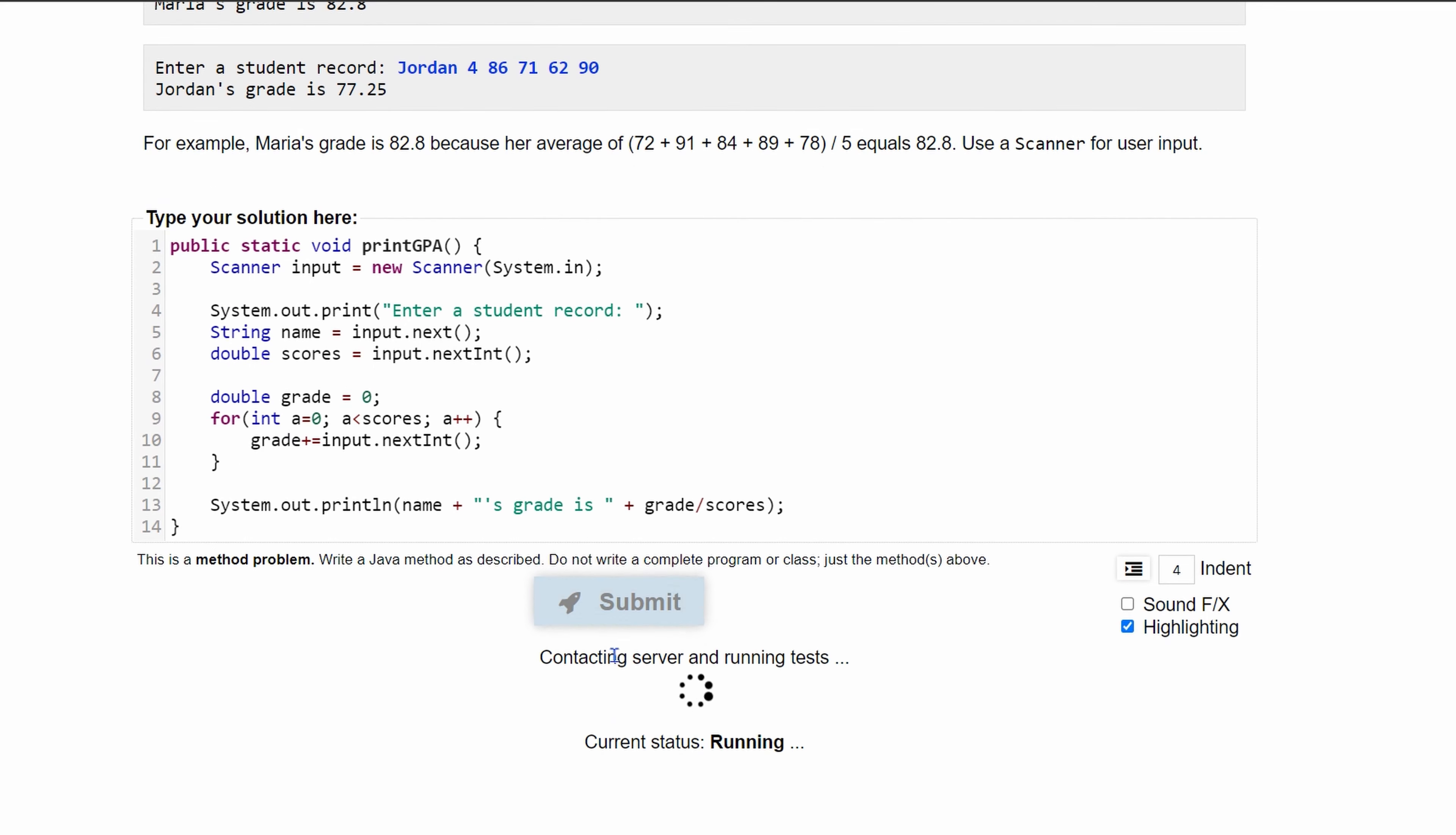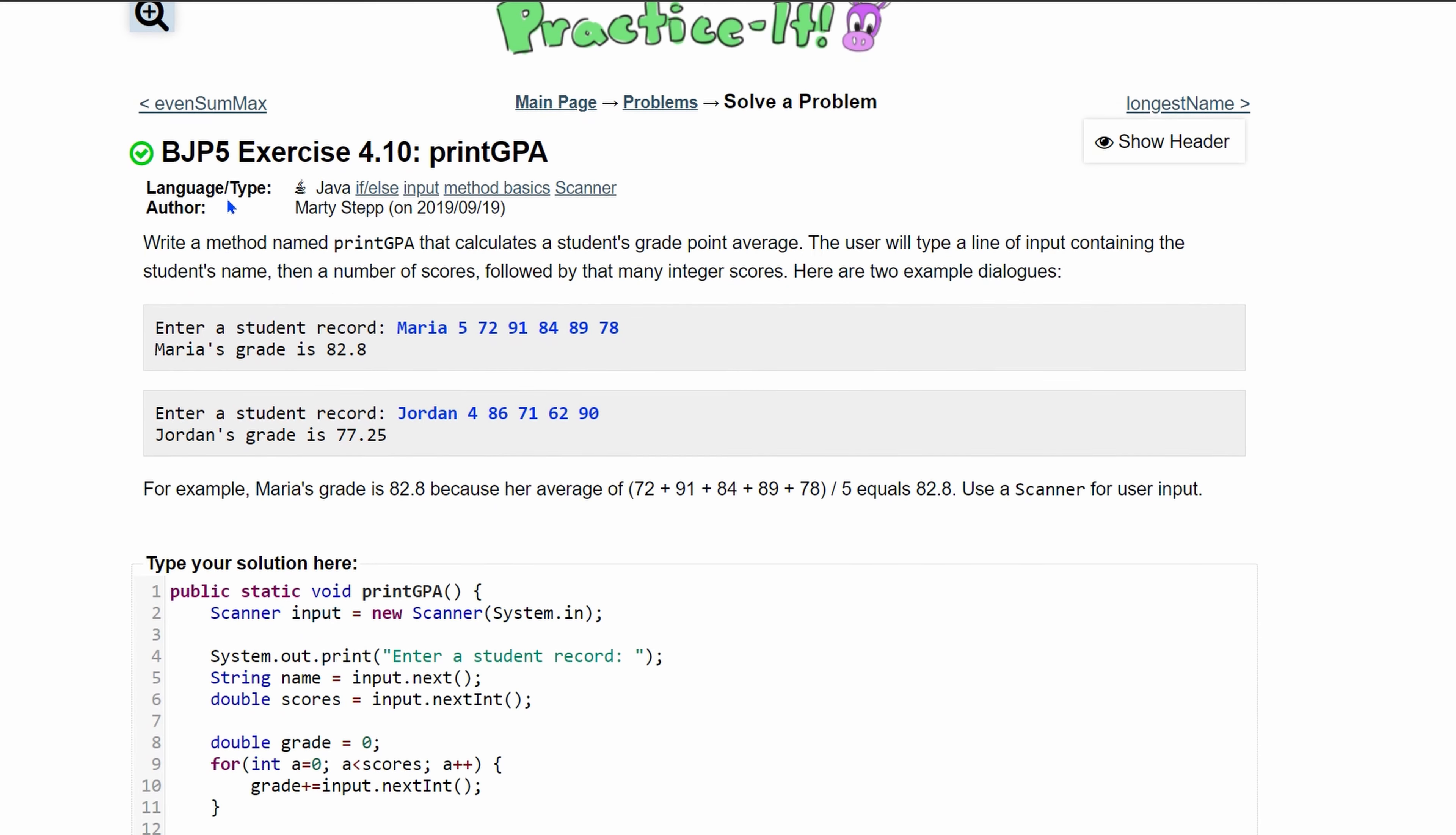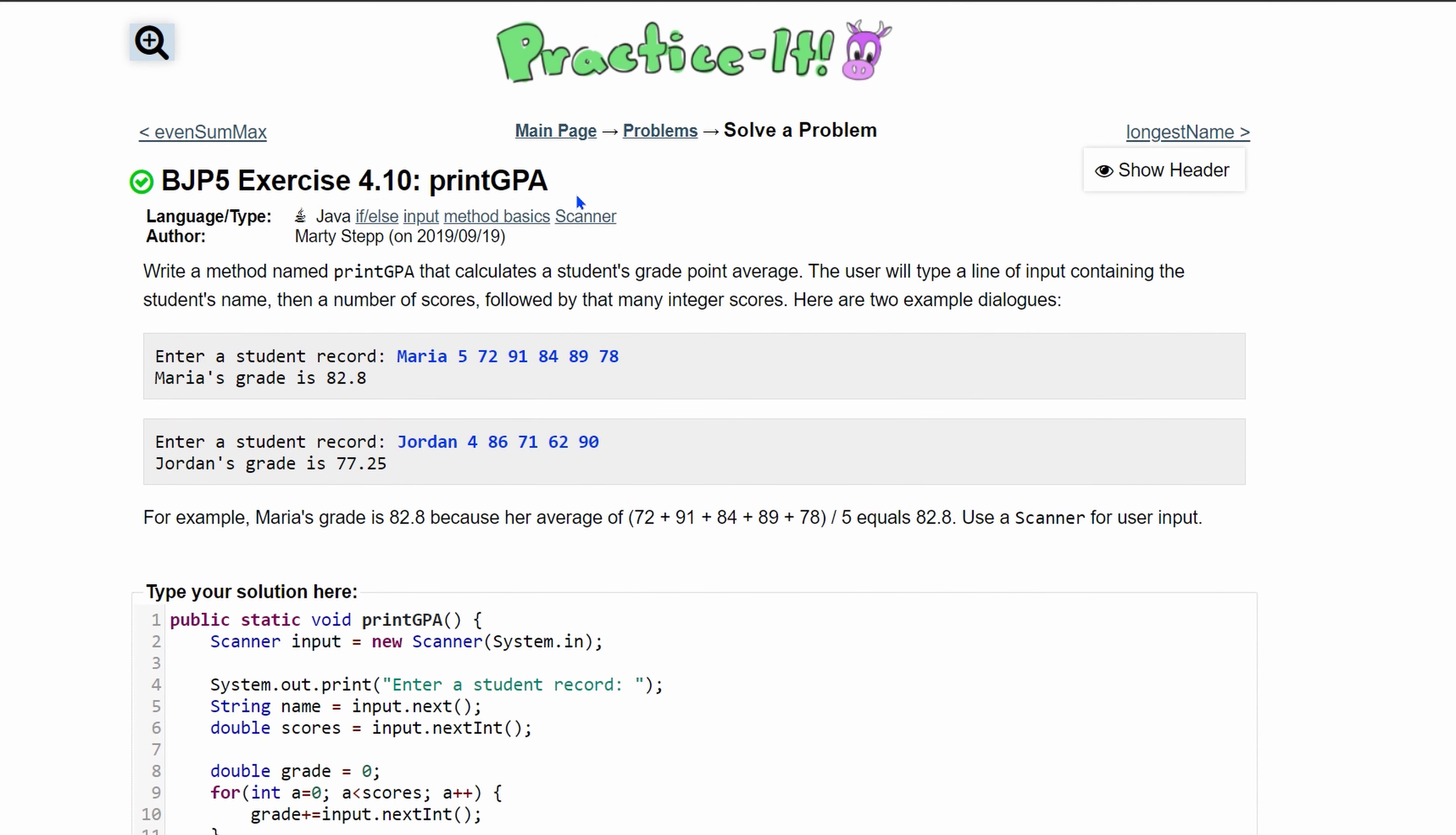With that done, we can click submit. And we have passed five out of five tests. So that's how you would go about solving Practice-It exercise 4.10, which is printGPA.